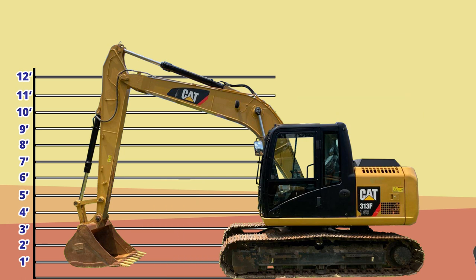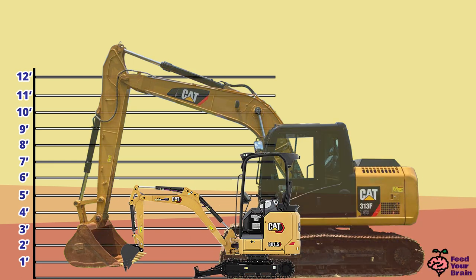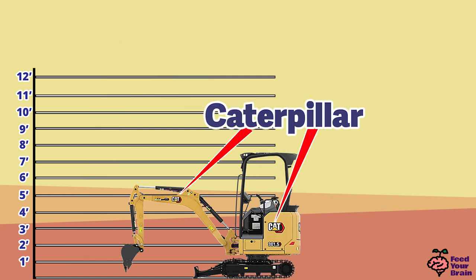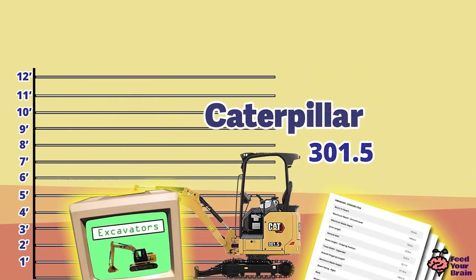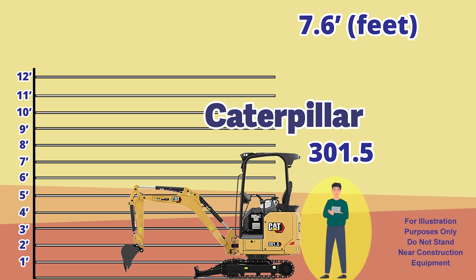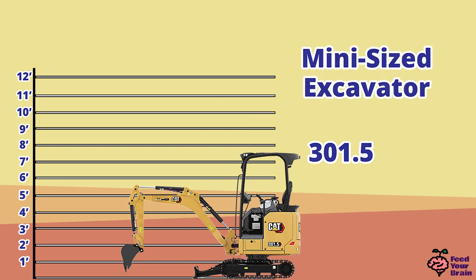This looks like another Caterpillar brand excavator — you can see the CAT logo here. The model number is 301.5. After we research this model number, we find out that this model has a cab height of 7.6 feet, or 2.29 meters. This is how an average-sized person would look standing next to this small-sized excavator. This model number 301 excavator is considered a mini-sized excavator.